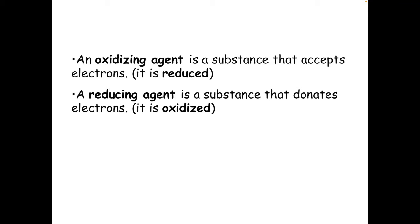Basically, an oxidising agent is something that accepts electrons. In a reduction reaction, that is when you have something gaining electrons. So what actually happens is an oxidising agent is something that is itself reduced. And when it's reduced, because redox happens and oxidation and reduction happen at the same time, then it must oxidise something else.